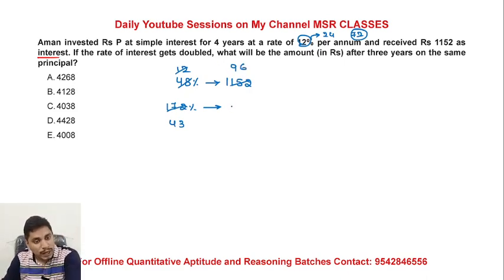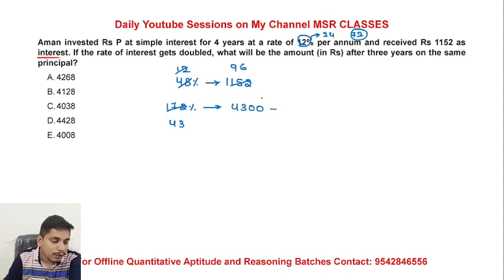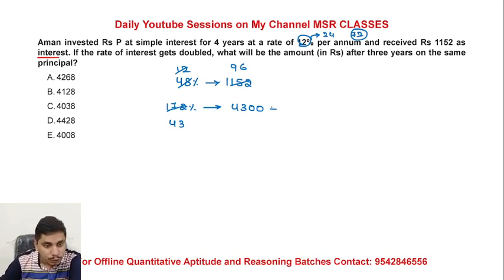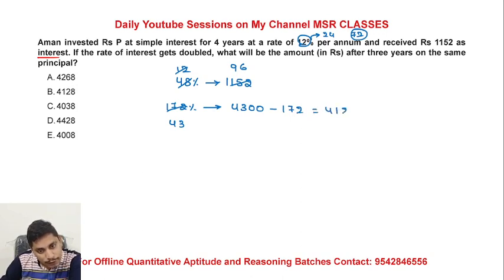100 times 4, 3 double 0 minus 4 times 86, double 80, 81, 61, 72. Then 200 times 4, 1 plus 28. So 4, 1, 2, 8 — 4128 is my final answer for this question option.